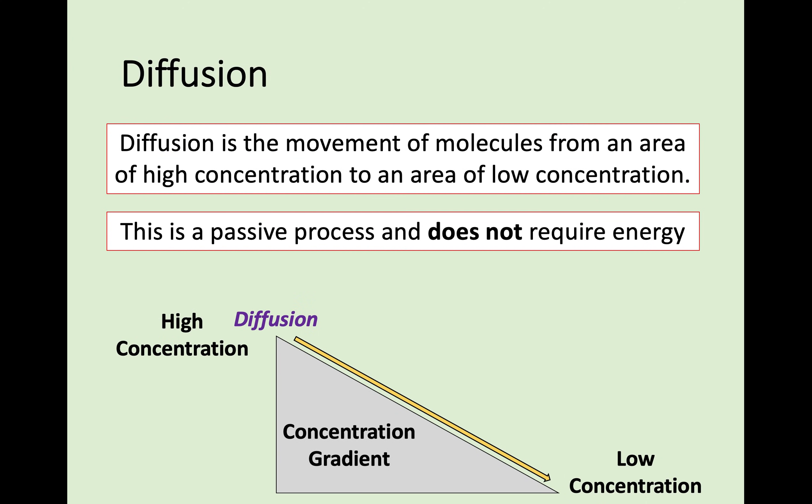The first method of transport across the membrane we're going to look at is diffusion. Diffusion is the movement of molecules from an area of high concentration to an area of low concentration. Because this is going from high to low, it does not require any energy — it just happens. You don't need to add energy to it.